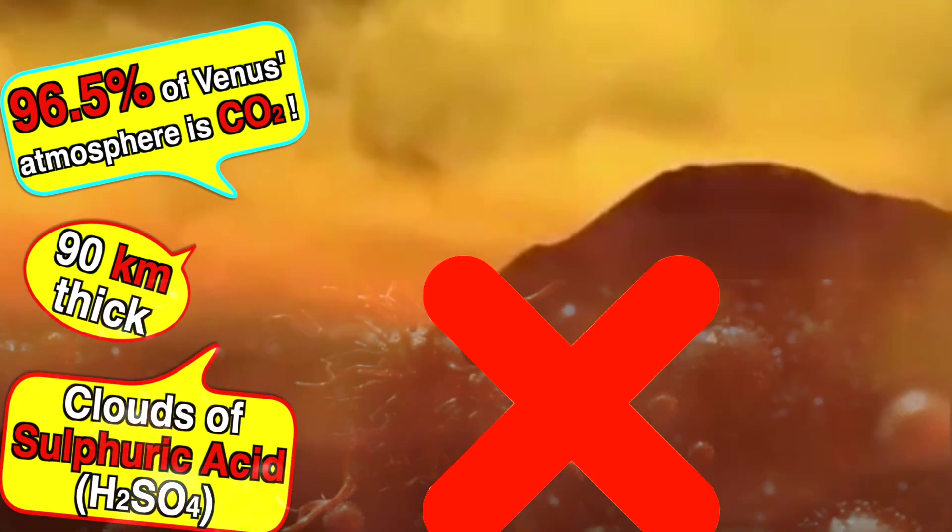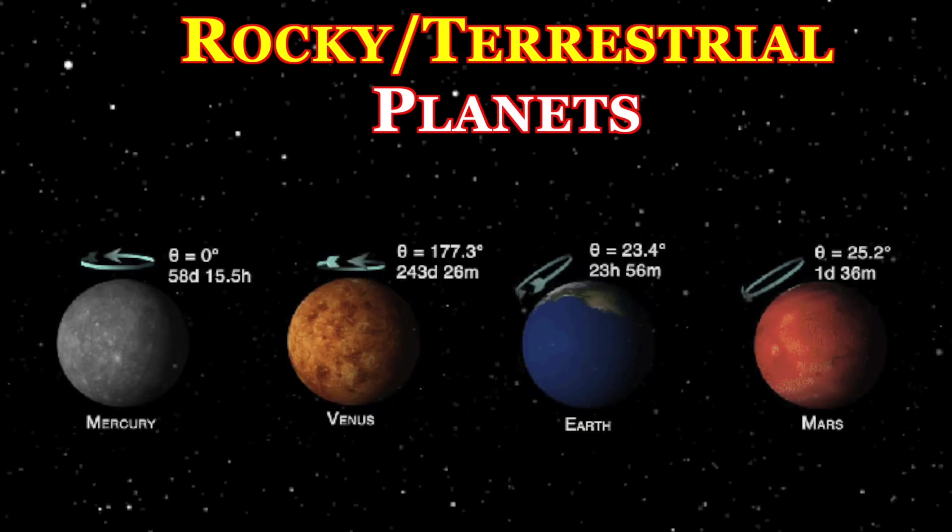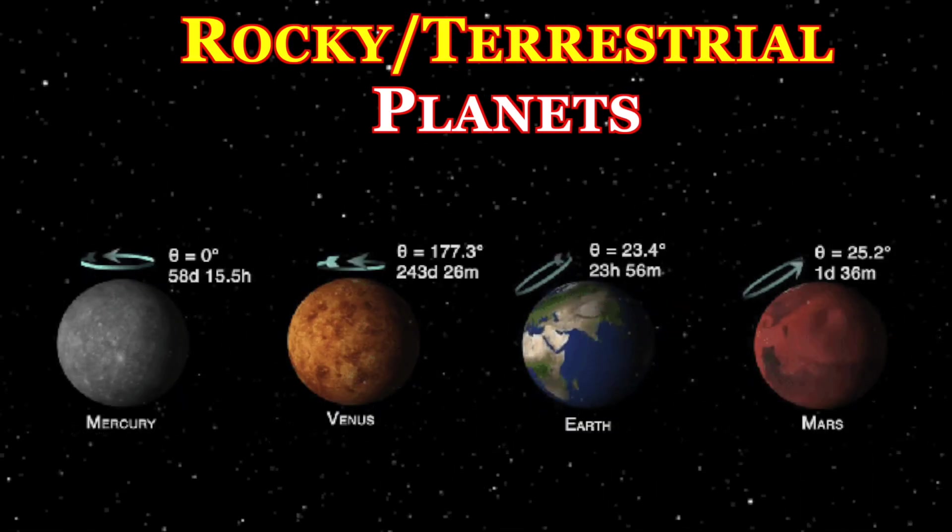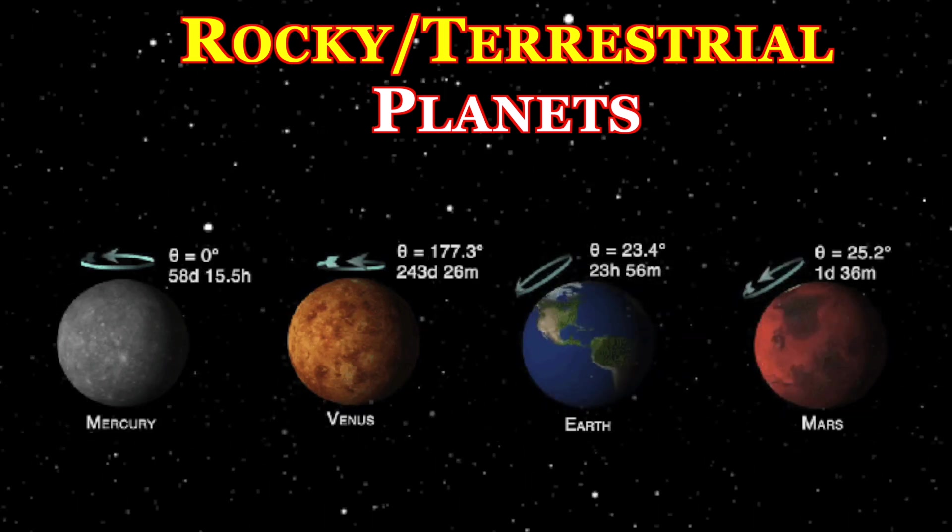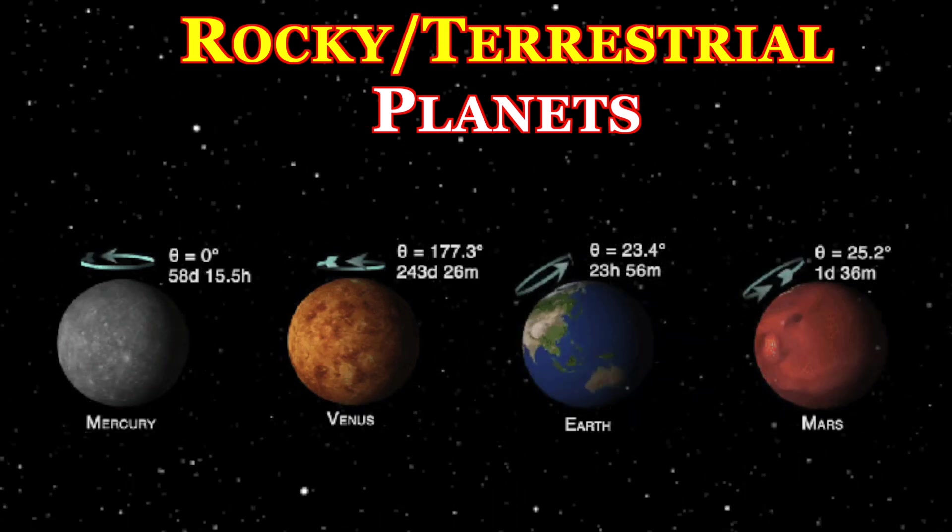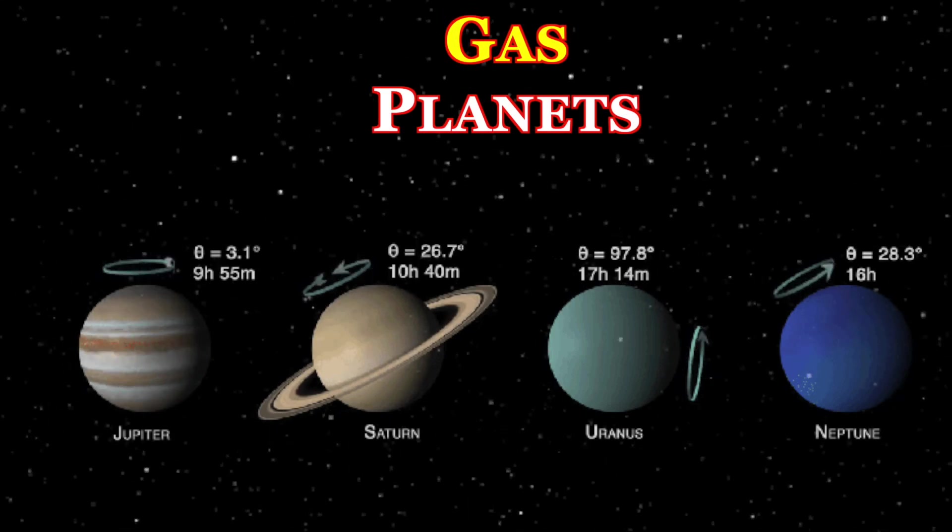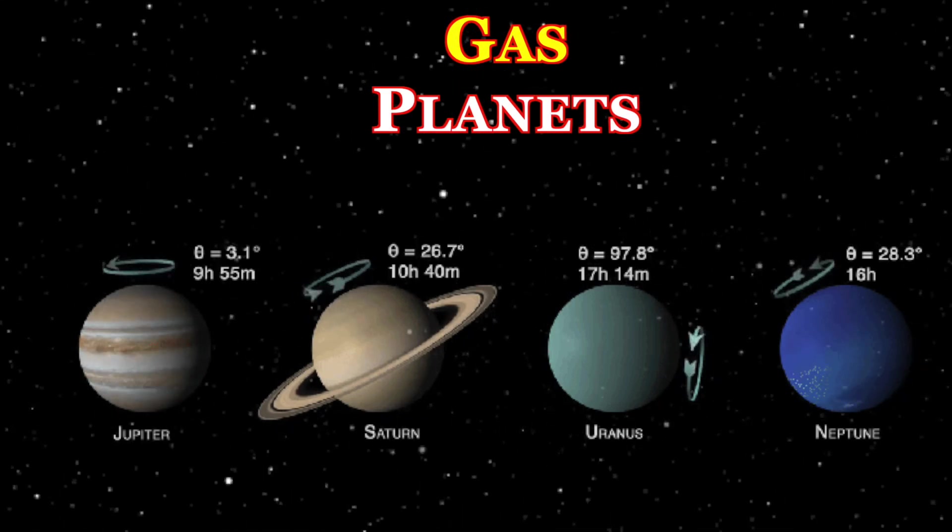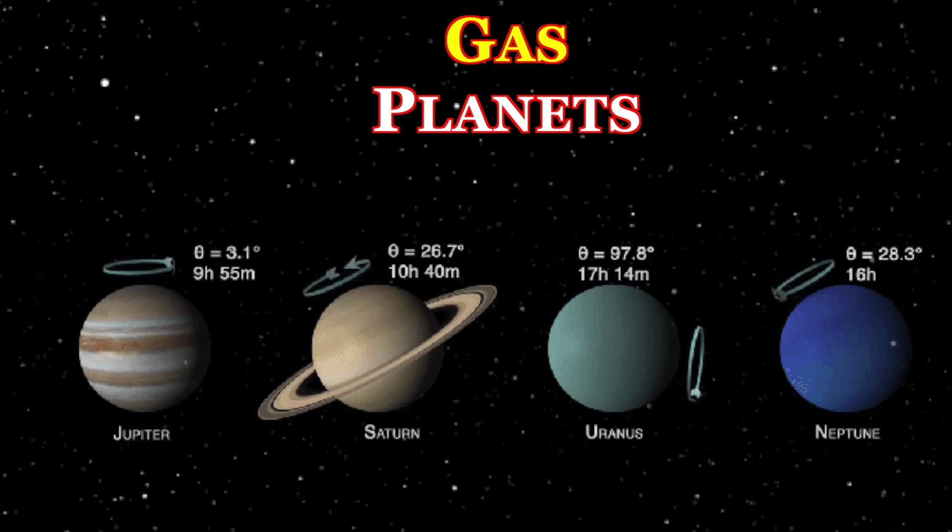Now interestingly on terrestrial planets, Mercury, Venus, Earth and Mars are called rocky planets or terrestrial planets. The other four, Jupiter, Saturn, Uranus and Neptune, these are called gas giants.